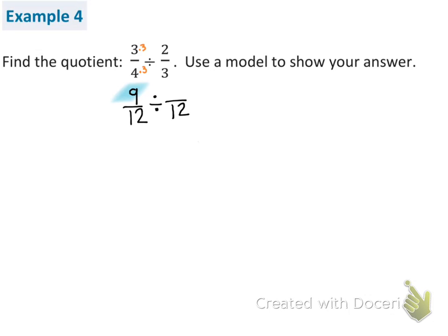And the same: 3 times what number gives me 12? Well, I know that 3 times 4 is 12. So to get the numerator, I need to do 2 times 4, and 2 times 4 is 8. So I am working with 9 twelfths divided by 8 twelfths.